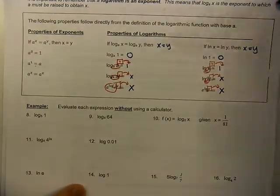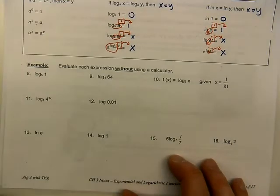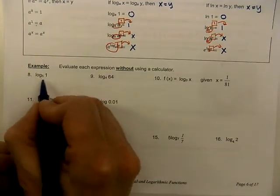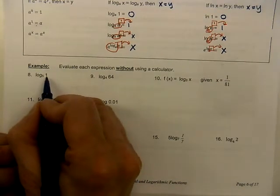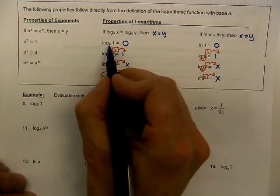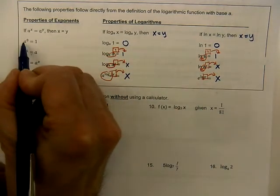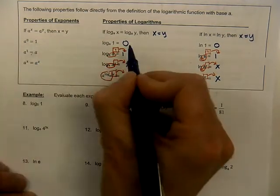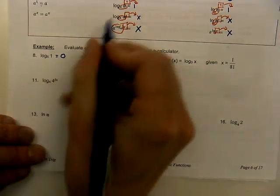We're going to be using some of these properties in our examples as we evaluate. Evaluate means we want a number for an answer, but we're not using a calculator. Here's number 8: log base 5 of 1. Anytime you see a 1, a red flag should go off — something special is here. Log of any base of 1 equals 0. Why? Because any base to the power of 0 equals 1. So what is that exponent? That exponent is 0.